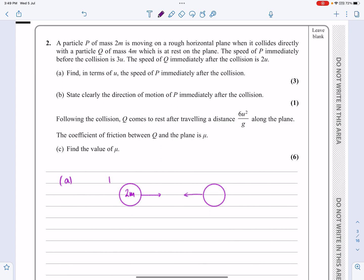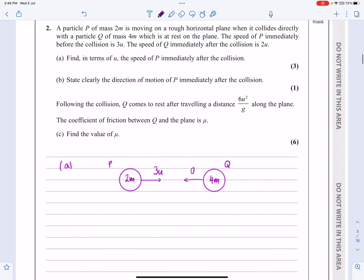This one is P, this one is Q. Q has a mass of 4m. We know that P initially is moving with 3u, and Q isn't moving. Zero on there, or you could have no arrow at all. And this is the before diagram.